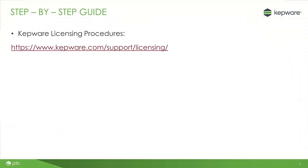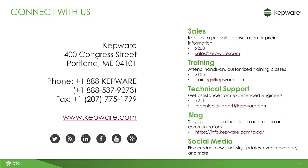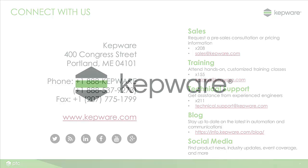You have successfully activated your KepServer EX license. You can refer to these same step-by-step instructions online at Kepware.com/support/licensing. For other licensing situations such as support renewals and upgrades from version 5 to version 6, please refer to the associated video. If you need additional help, contact your software vendor or Kepware technical support at 1-888-Kepware or 207-775-1571.